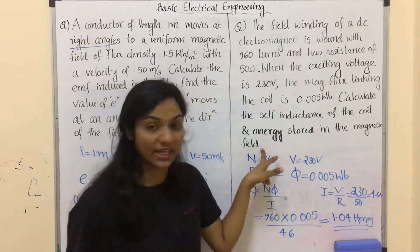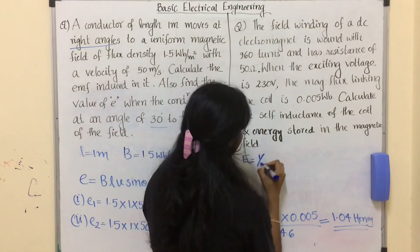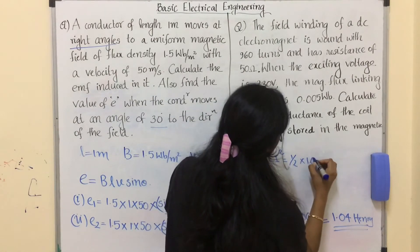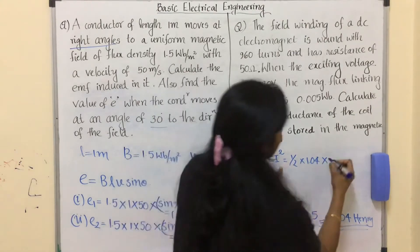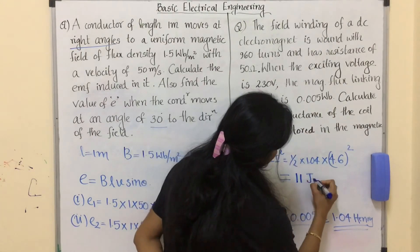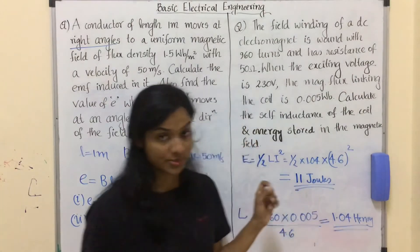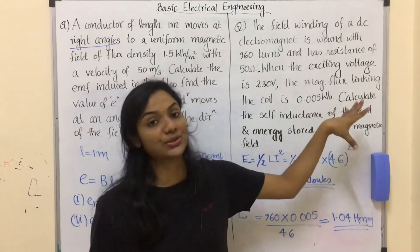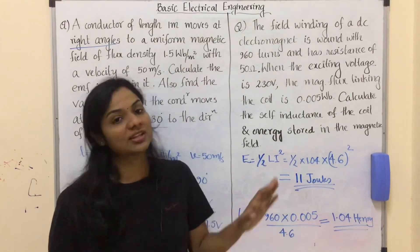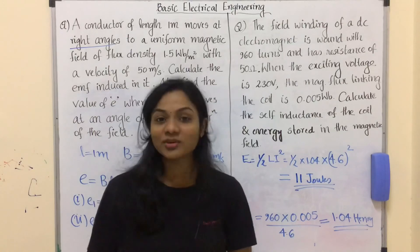For the second part, we calculate energy stored in the magnetic field. Energy E = ½LI². Here L = 1.04 henry and I = 4.6 ampere, which gives 11 joules. The unit of energy is joules. So this was an example for statically induced EMF and the previous was for dynamically induced EMF. These are direct application of formula type questions. We will see you in the next video, thank you.